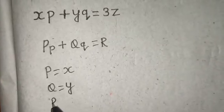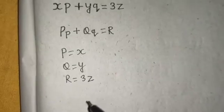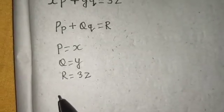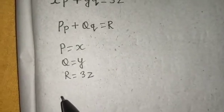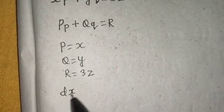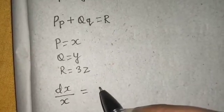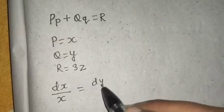This was the first step. Then we write the auxiliary equation or the subsidiary equation, whichever way you want to say that, that is dx by P equals to dy by Q equals to dz by R.